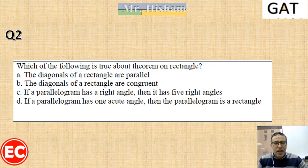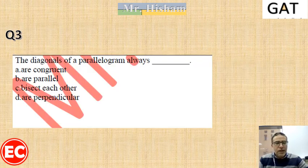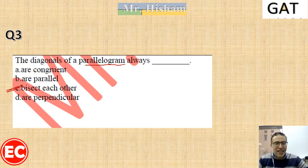Question: which of the following is true about the rectangle? Are the diagonals parallel? No — diagonals are never parallel. Are the diagonals congruent? Yes — in a rectangle the diagonals are equal in length, so that is the correct answer. As for the parallelogram in general: diagonals bisect each other, but they are congruent only in the rectangle and square, and perpendicular only in the rhombus.